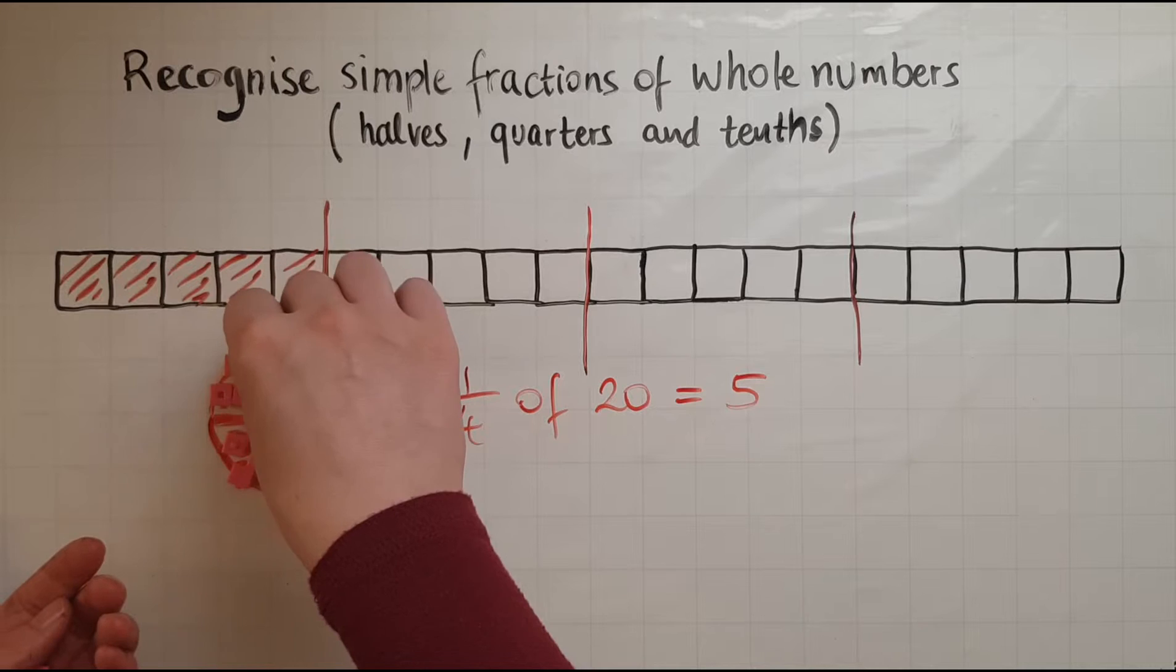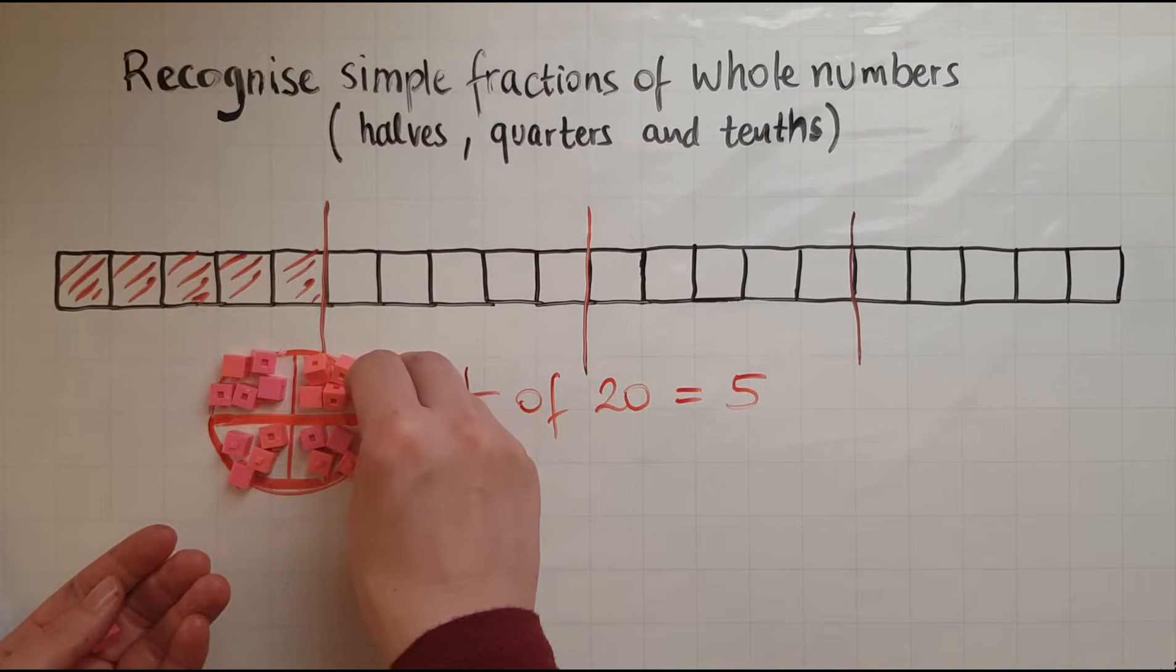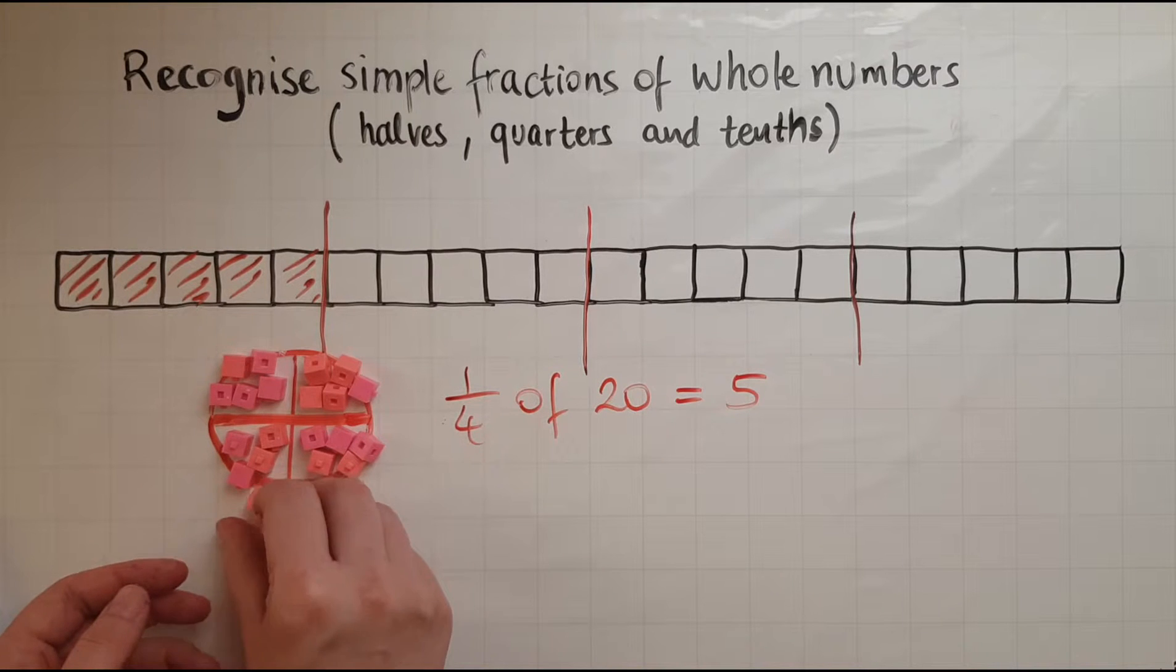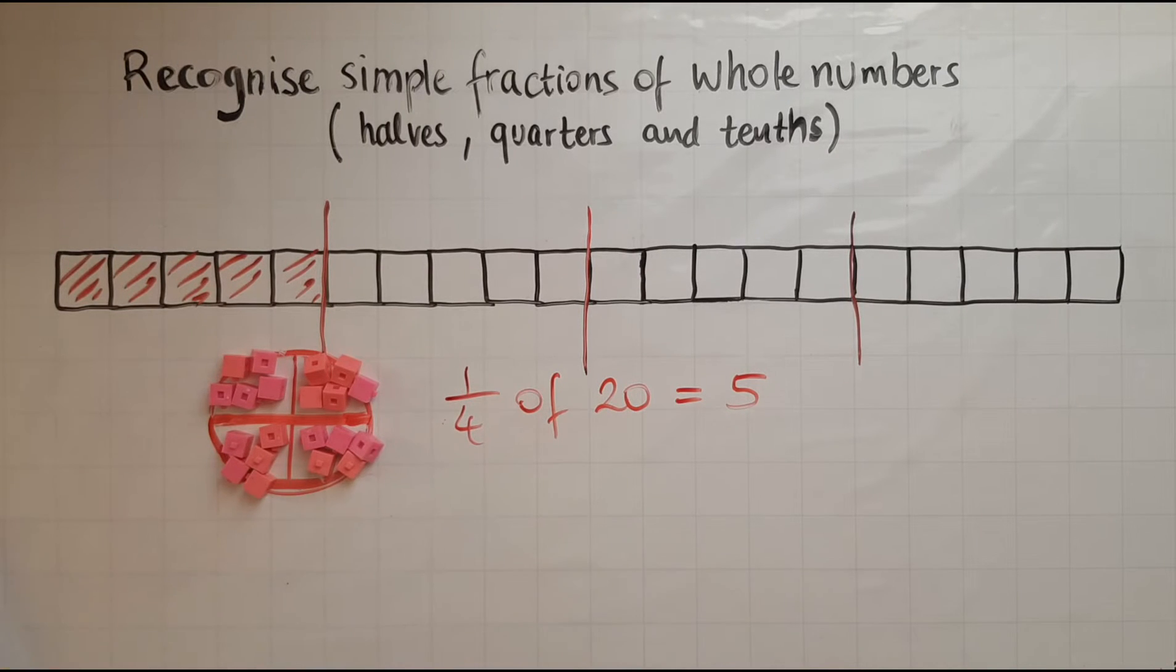I could have made the shape a bit bigger. So I've got 5 in each part of these. So again, 1 quarter of 20 is equal to 5. I could have created other groups as well and try and place them, but the answer would still be the same.